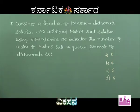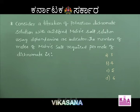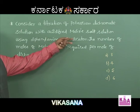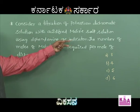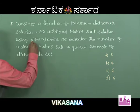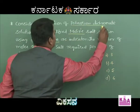Consider a titration of potassium dichromate solution with acidified Mohr salt solution using diphenylamine as indicator. The number of moles of Mohr salt required per mole of dichromate is to be determined. This is a redox titration between Mohr salt — ferrous ammonium sulfate (FAS) — and potassium dichromate solution, in the presence of diphenylamine as indicator.